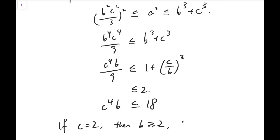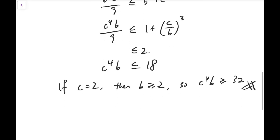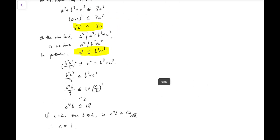But if c equals to 2, then b also has to be at least 2. So c to the 4 times b is at least 32. Contradiction. Therefore, we know that the smallest number is 1. So that's the first part.